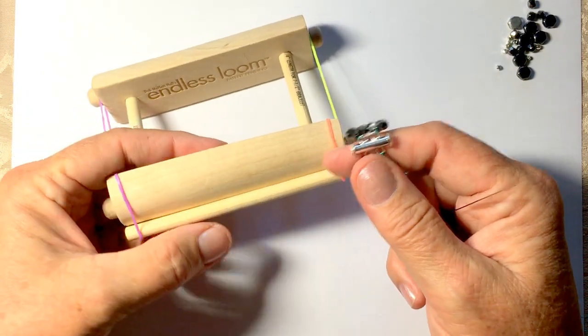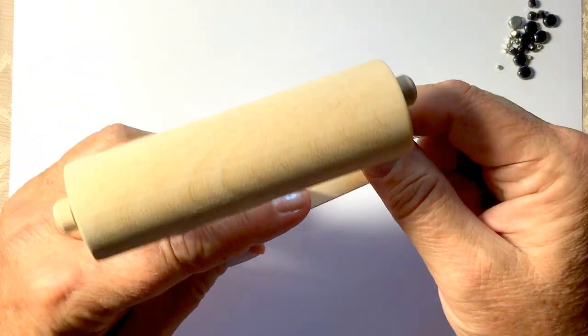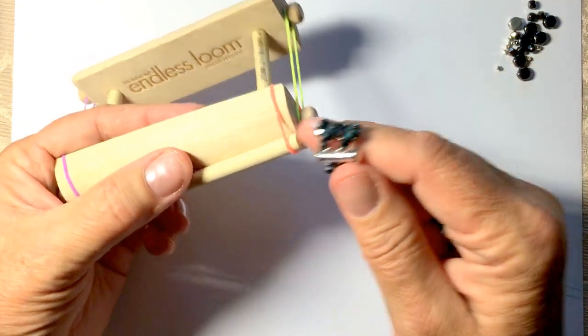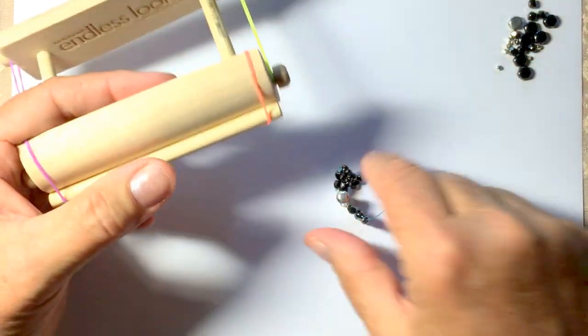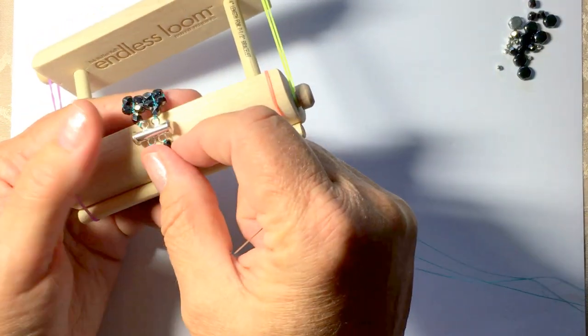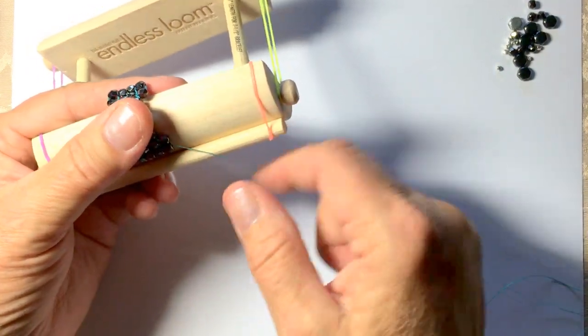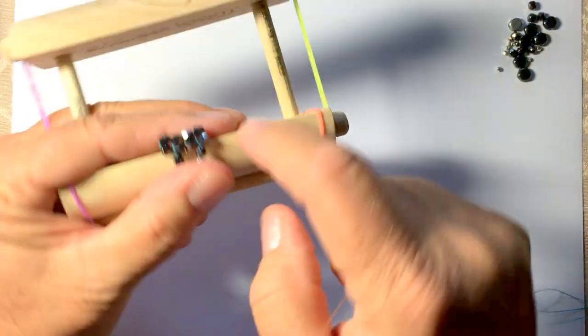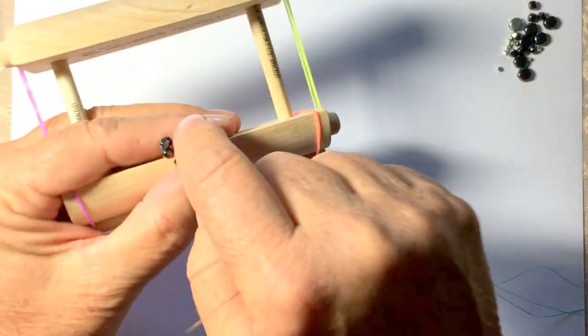Pick up your loom with a finger on either side of the spacer bars like this, and your non-dominant thumb free to grasp. Place the starter piece on the loom, and put your thumb on the clasp because you want access to both sides, the beads on both sides.